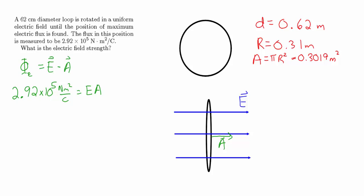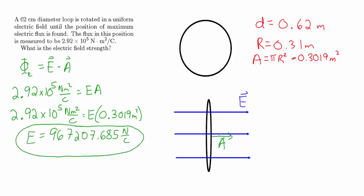Plugging that in allows us to find the electric field strength. The flux of 2.92 times 10 to the fifth Newton meter squared per coulomb equals the electric field times the area of 0.3019 square meters. This gives an electric field strength of 967,207.685 newtons per coulomb.